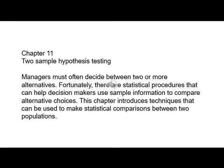Managers must often decide between two or more alternatives. Fortunately, there are statistical procedures that can help decision-makers use sample information to compare alternative choices. This chapter introduces techniques that can be used to make statistical comparisons between two populations.